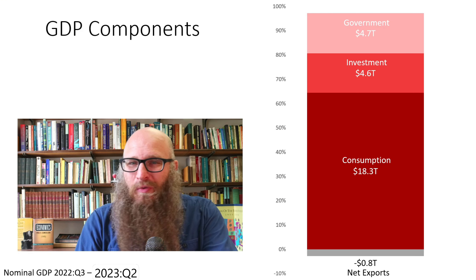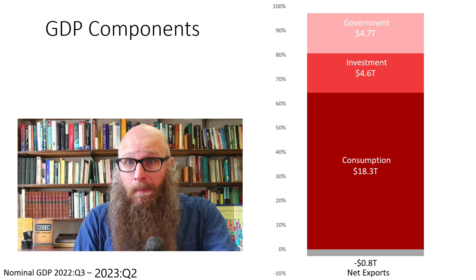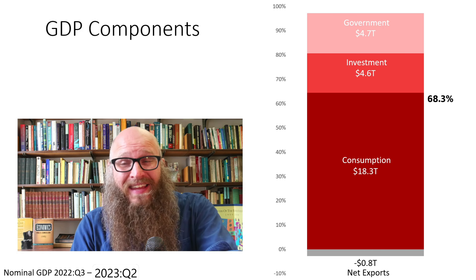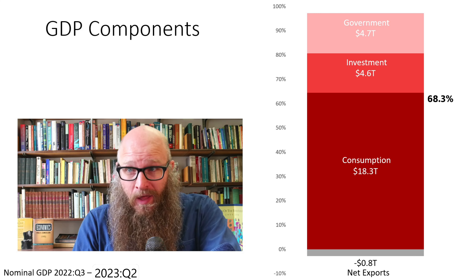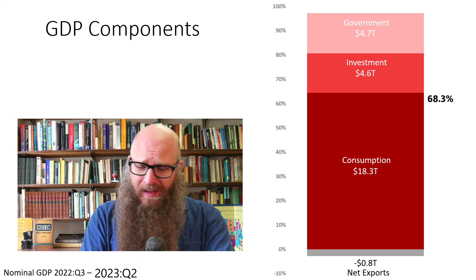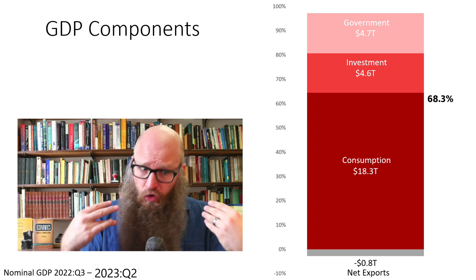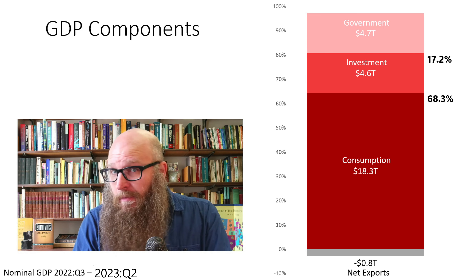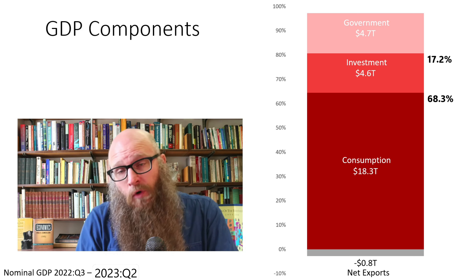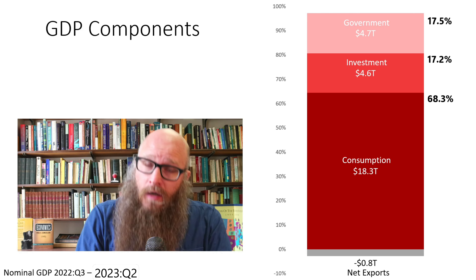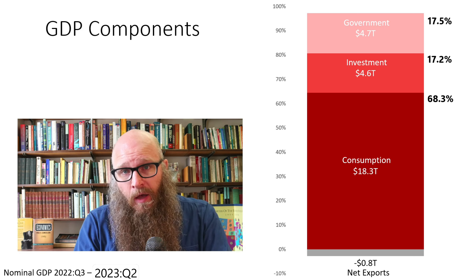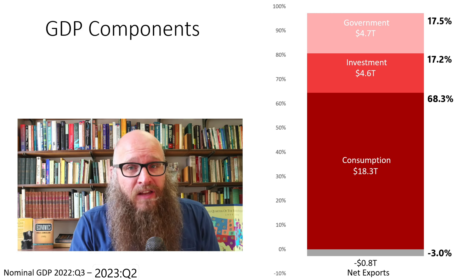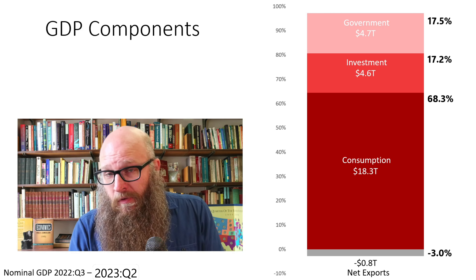What does this look like in the real world? Consumption is by far the biggest component — $18 trillion, or 68% of GDP. This makes sense: the purpose is final goods or services, and households are usually the end product for most goods. Investment comes in at 17%, or $4.6 trillion. Government expenditures are nearly the same size. And then net exports are a negative $0.8 trillion, or negative 3% of GDP.